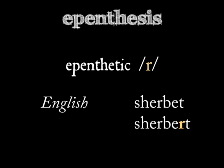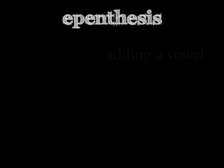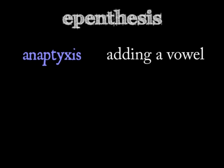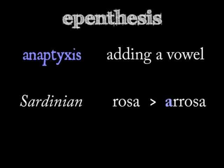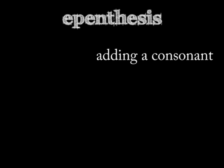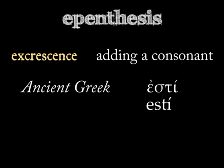Not all added sounds are the same. Is the additional sound a vowel? That's anaptyxis. Sardinian speakers changed 'rosa' to 'arrosa' by adding an anaptyctic vowel to the front of the word. Is the added sound a consonant? That's called excrescence. Ancient Greek speakers sometimes pronounced their word 'esti' as 'estin,' adding an excrescent consonant.